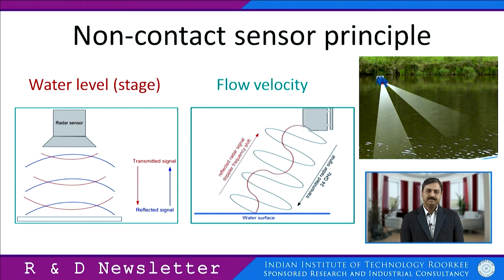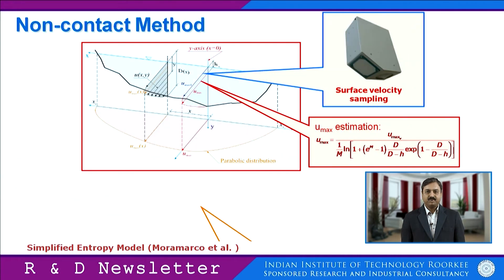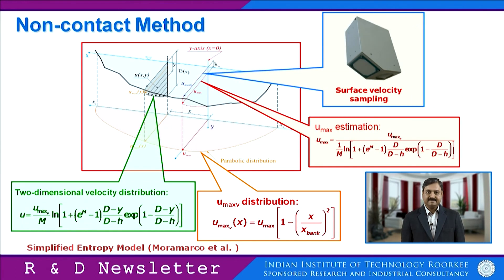Under this project we will be deploying non-contact sensors which are working on the radar principle. The water level would be measured using the radar principle, and the velocity of the flow would be measured by measuring the shift in the radar frequency. The sensor will first sample the velocity, and from there, using entropy principles, we will be estimating the maximum flow velocity and the horizontal velocity profile would also be estimated.